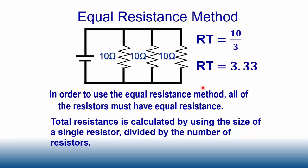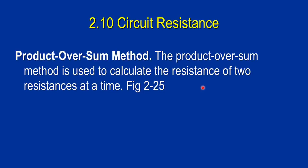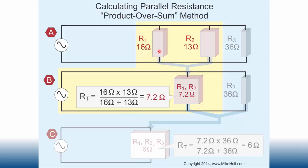If resistances differ, we use the product over sum method, which handles only two resistors at a time. Total resistance equals the product of the two resistors divided by their sum. Here I have 16 ohms and 13 ohms: 16 times 13 equals 208, divided by 16 plus 13 which is 29, giving 208 divided by 29 equals 7.17, rounded to 7.2 ohms.